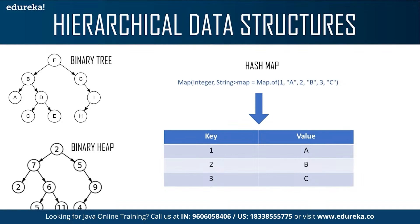A binary heap is a complete binary tree that satisfies the heap property. A tree is complete if all levels except possibly the deepest are full. It can be a min-heap, where every node's value is less than or equal to its children's values, or a max-heap, where every node's value is greater than or equal to its children's values. Popular applications include implementing efficient priority queues and efficiently finding the K smallest elements in an array.